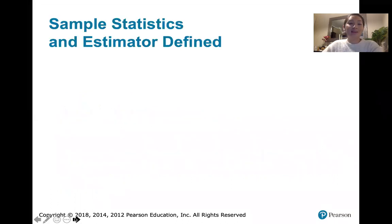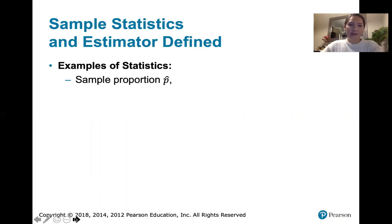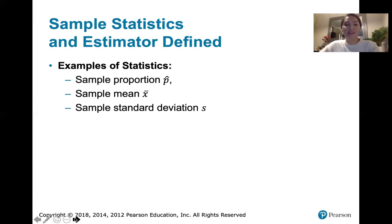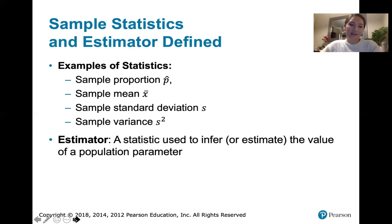Before we do that, let's talk about what an estimator is. We've already seen sample statistics in our course. A statistic is a value associated with a sample taken from a population. One example is a sample proportion p-hat. You might have a larger population, select a sample, and be interested in that sample proportion. Or you might compute the mean X-bar, a standard deviation, or a sample variance.